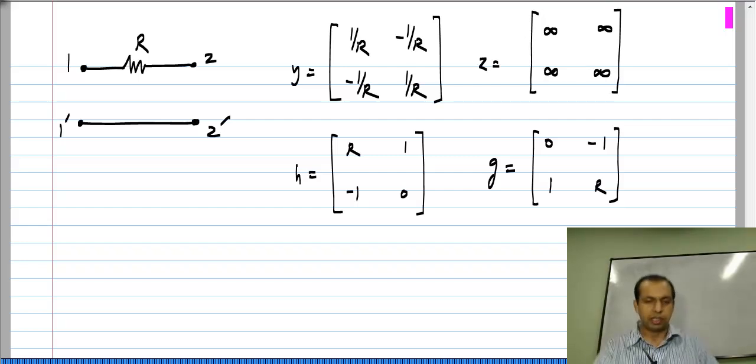Now you can also see that this Y matrix has two rows which are dependent. The second row is simply negative of the first row, so this cannot be inverted. This is one way to think about it.